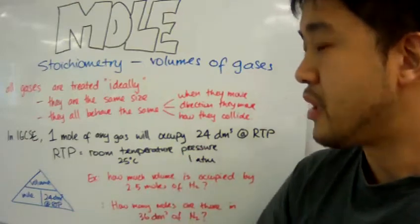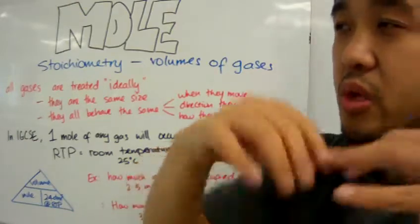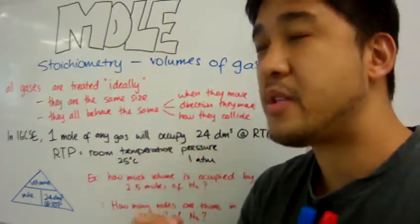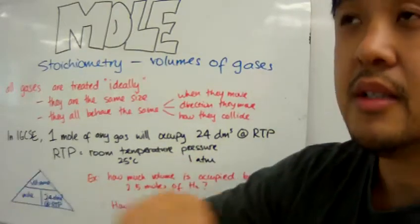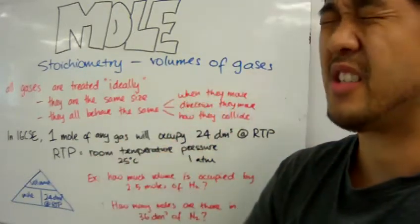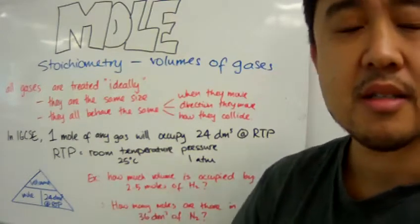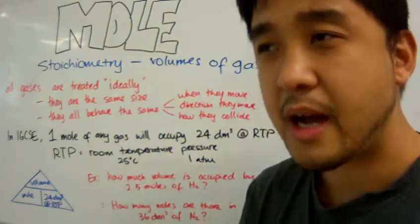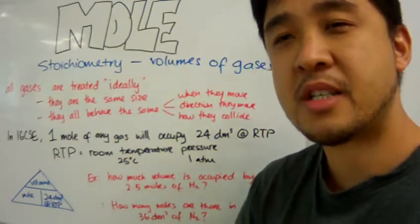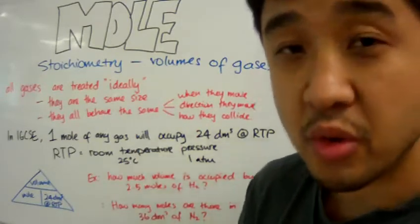Now so at 25 degrees Celsius and 1 atmospheric pressure which is sea level, any gas whether it's nitrogen, carbon dioxide, argon, methane they will all occupy 24 cubic decimetres of space or 24 litres.